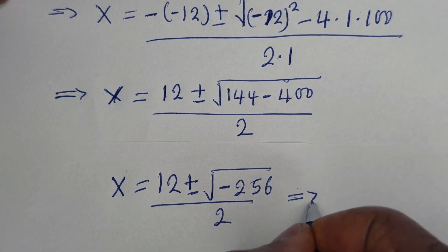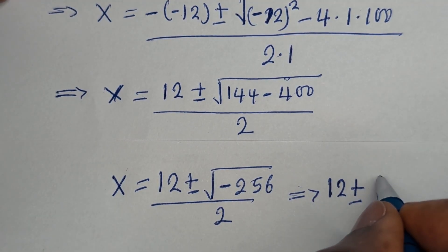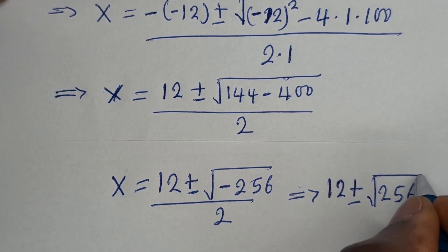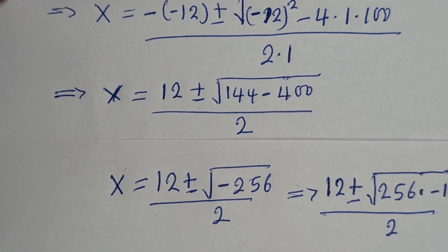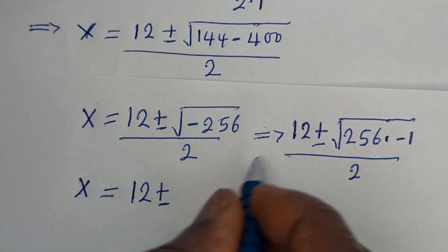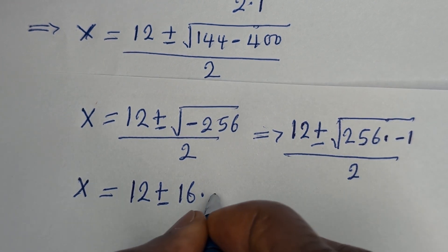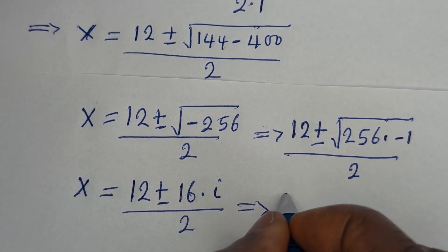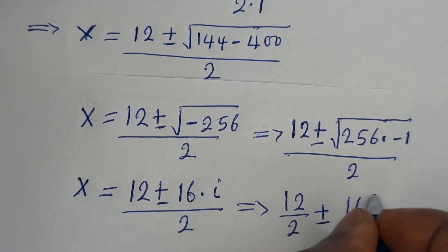This is the same as 12 plus or minus the square root of 256 multiplied by negative 1, over 2. Since the square root of 256 is 16 and the square root of negative 1 is i, we get S equals 12 plus or minus 16i, over 2. This simplifies to 12 over 2, plus or minus 16i over 2.